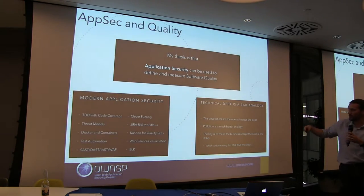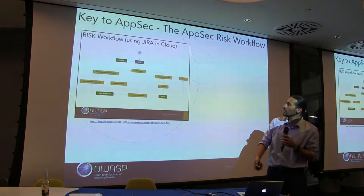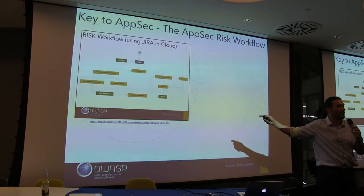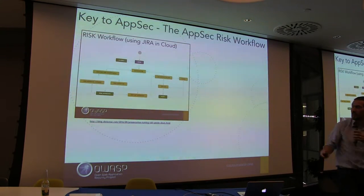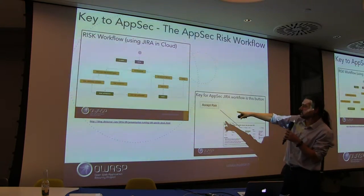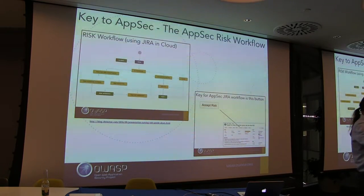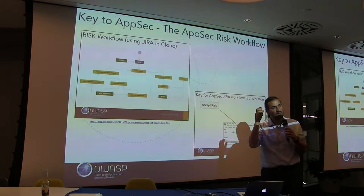We need to stop talking about technical debt — I think 'pollution' is a way better analogy. This is the key to unlocking the backlog. This is how you get people to actually pay attention to security: you create a risk workflow and give them a button to accept the risk. This is basically making sure your boss gets fired, he makes sure his boss gets fired, until you reach the CTO. That's when it becomes real — that's what you need to capture.